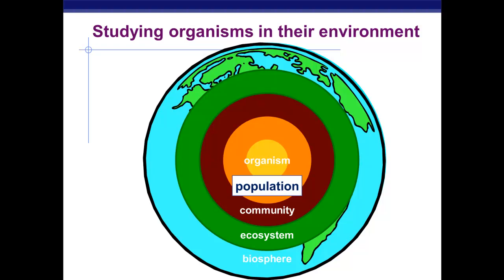Today we're going to look at populations, which are groups of individuals that are living together. Last class we looked at communities, which are interacting populations. You looked at producers and consumers, and how one population might eat another population or compete with another population.